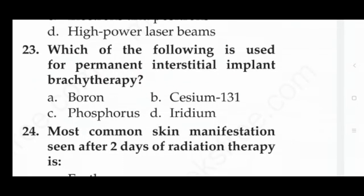Next question: which of the following is used for permanent interstitial implant brachytherapy — option A: boron, option B: Cs-131, option C: phosphorus, option D: iridium. The answer is option B, that is Cs-131.